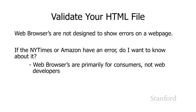Web browsers are not designed to show errors on a web page. If you're visiting someone's web page — like the New York Times or Amazon — and that page has errors, you don't want to know about it because it's not your web page. There are a shocking number of professional web pages with errors, often because of new extensions not yet part of the language, or old legacy code left in. So web browsers are designed primarily for consumers, not for web developers. The browser is not going to tell you if there are errors — it's just going to happily ignore them.